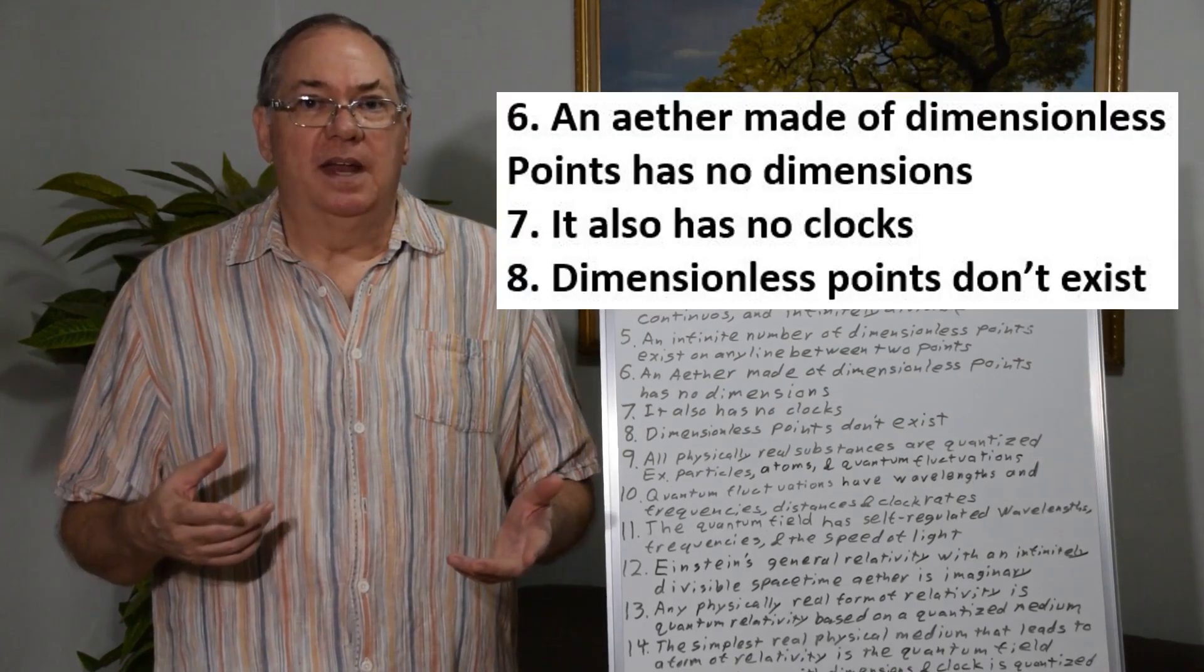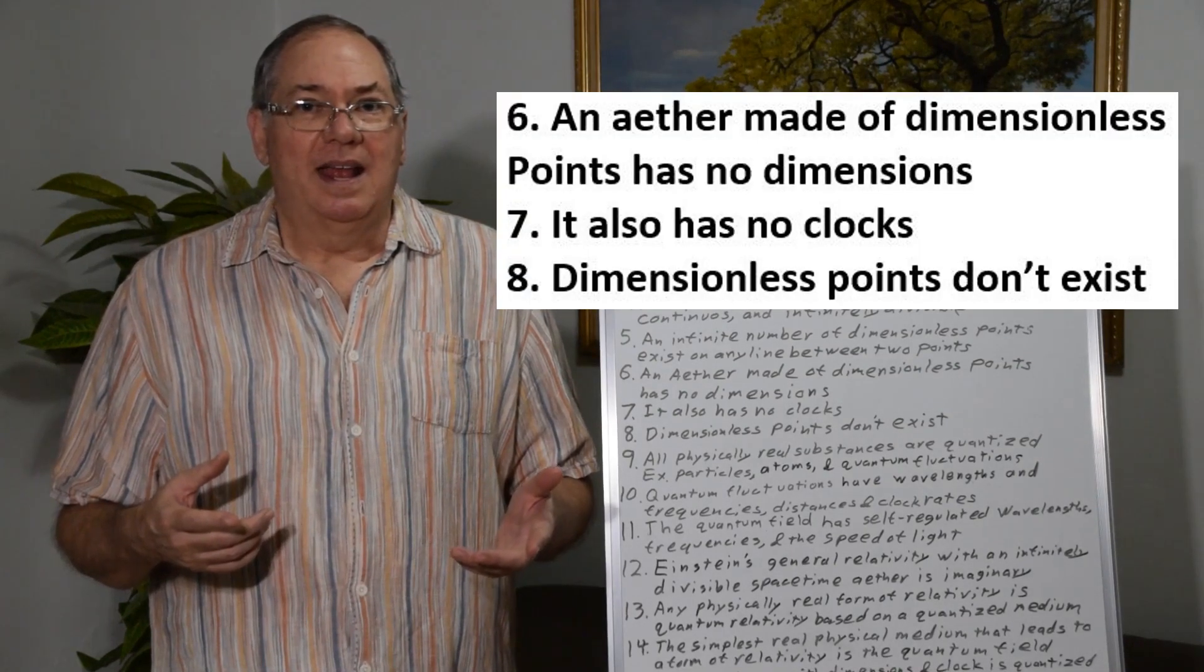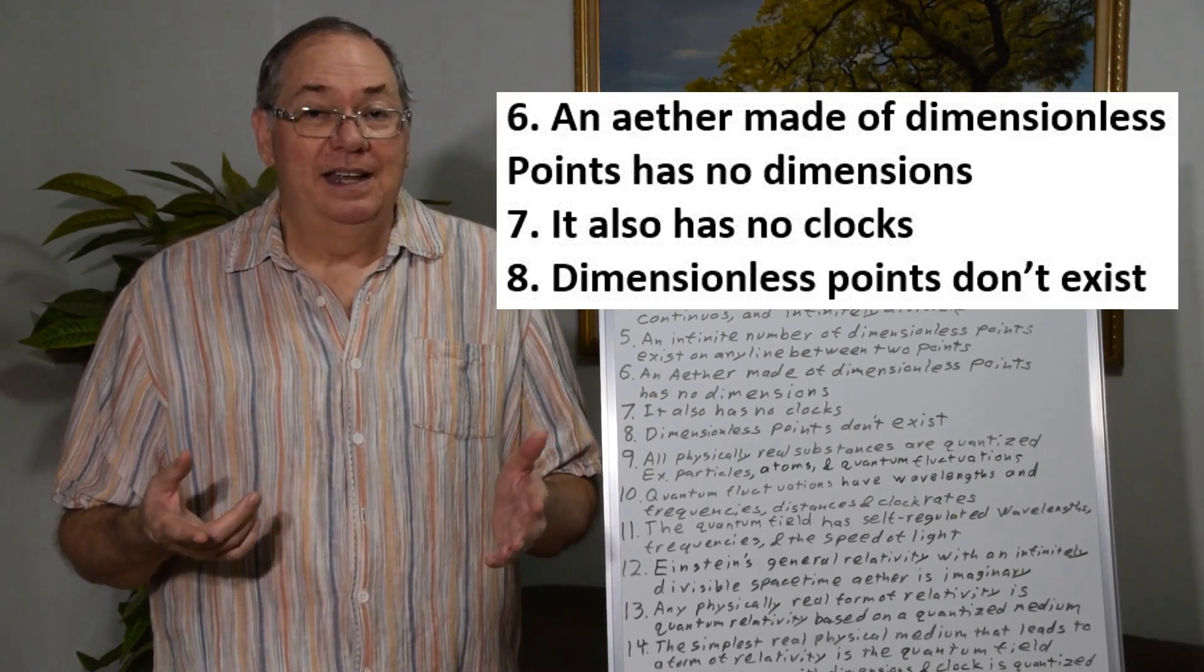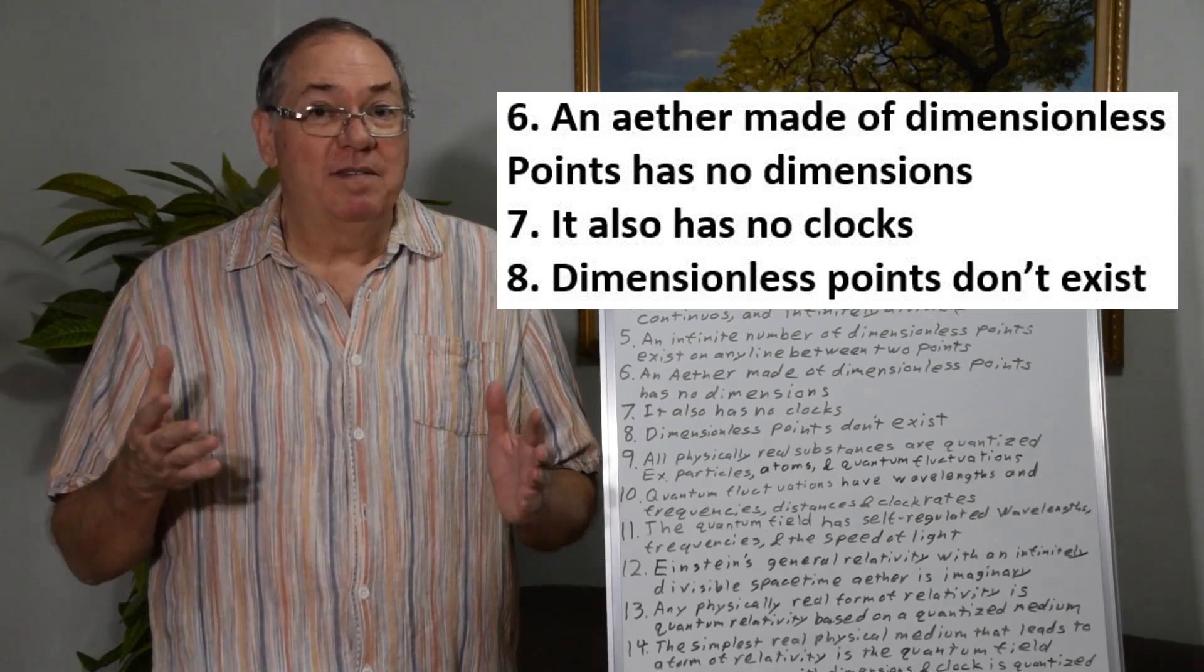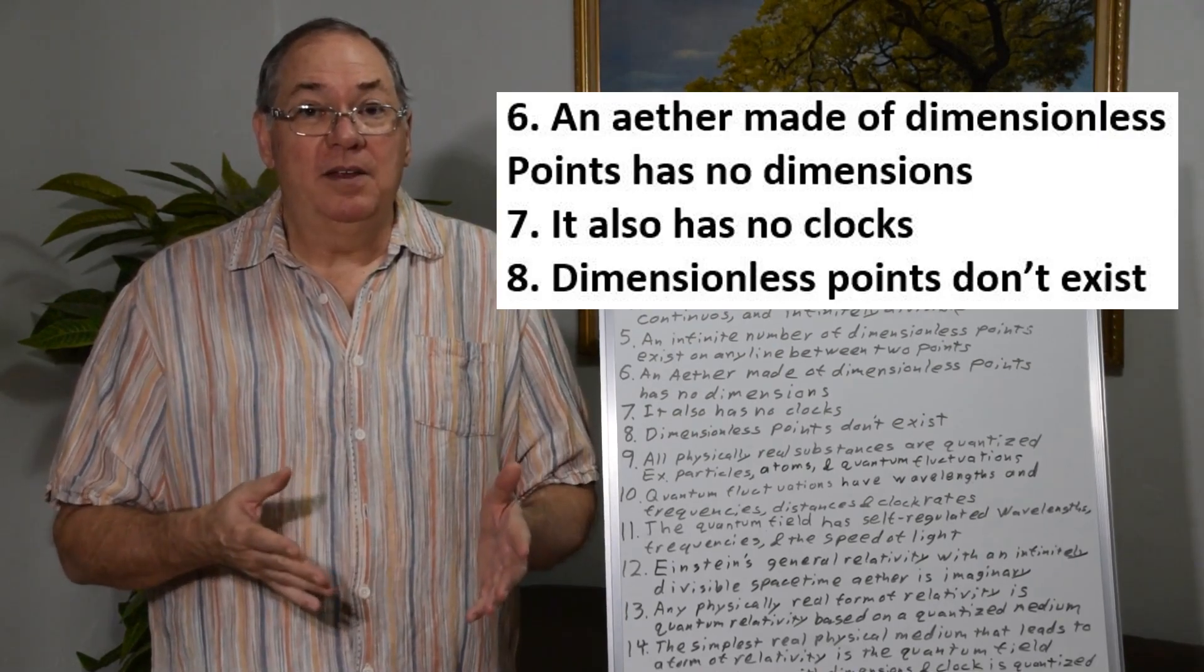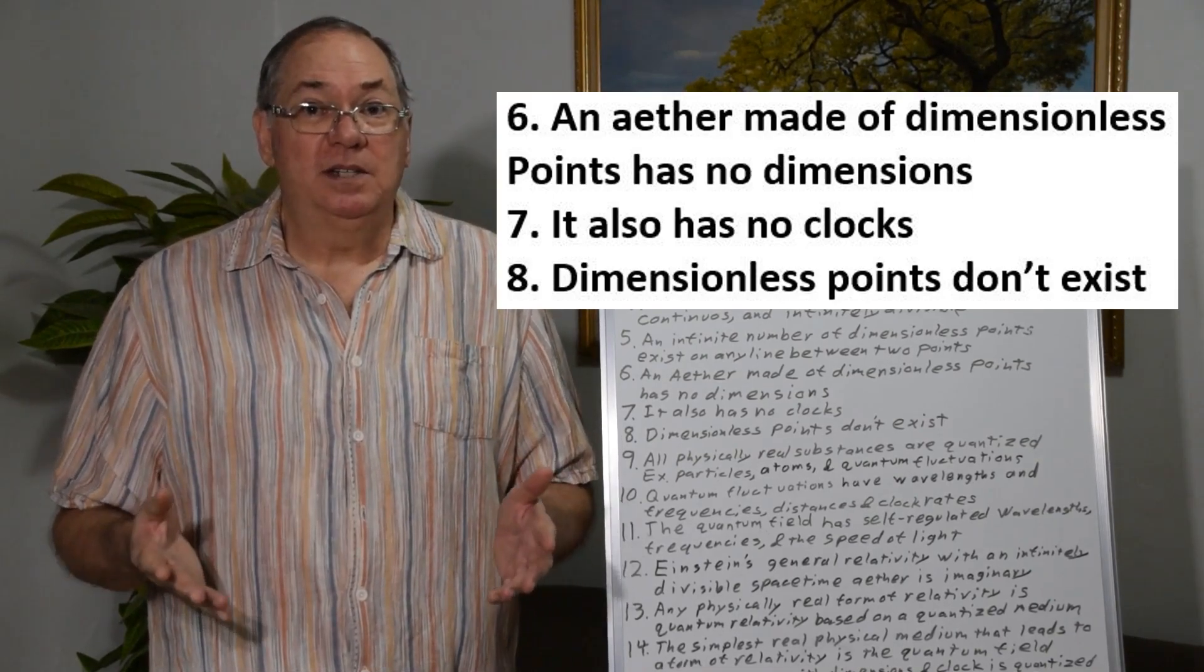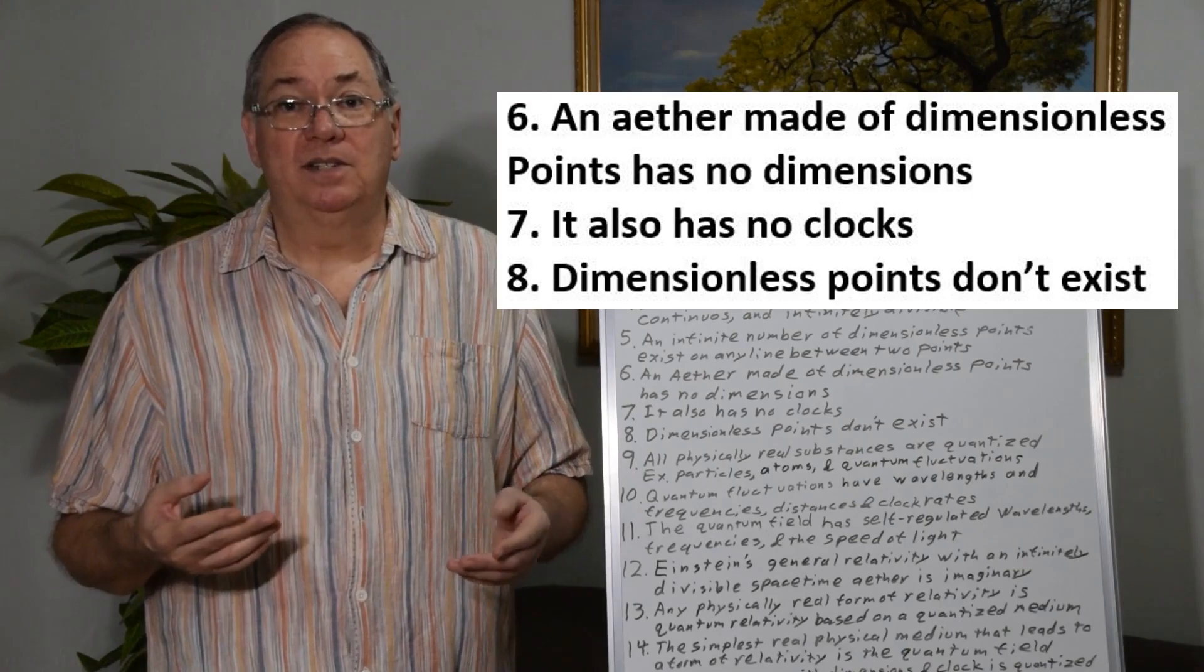But the problem with that is that points are dimensionless by definition. And if you have dimensionless points and you put them together you still don't have any dimensions. So an ether made of dimensionless points has no dimensions at all.